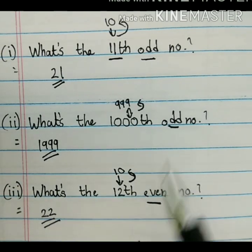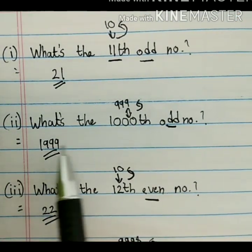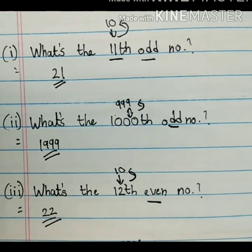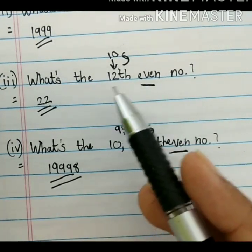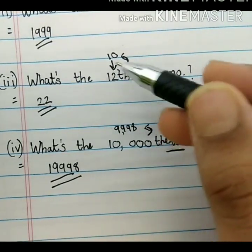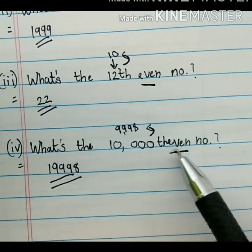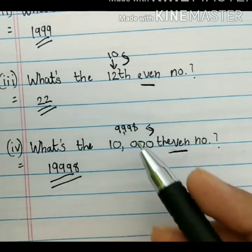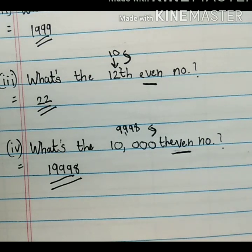Let's have a quick summary. For the 11th odd number: subtract 1 from 11 to get 10, then add 10 and 11 to get 21. For the 1000th odd number: subtract 1 from 1000 to get 999, then add 999 and 1000 to get 1999. For the 12th even number: subtract 2 from 12 to get 10, then add 10 and 12 to get 22. For the 10,000th even number: subtract 2 from 10,000 to get 9,998, then add 9,998 and 10,000 to get 19,998. If you liked this video, please hit the like button and don't forget to subscribe to the channel.